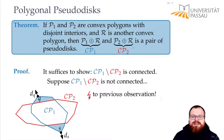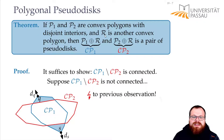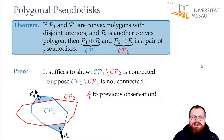Therefore, all our configuration polygons obtained from Minkowski sums form pairs of pseudodisks, meaning they pairwise intersect at most twice. From that, in the next part, we can derive the complexity of our whole configuration space and the runtime of the algorithm.